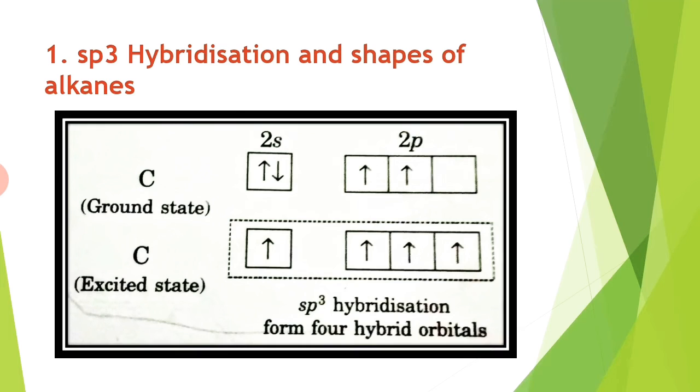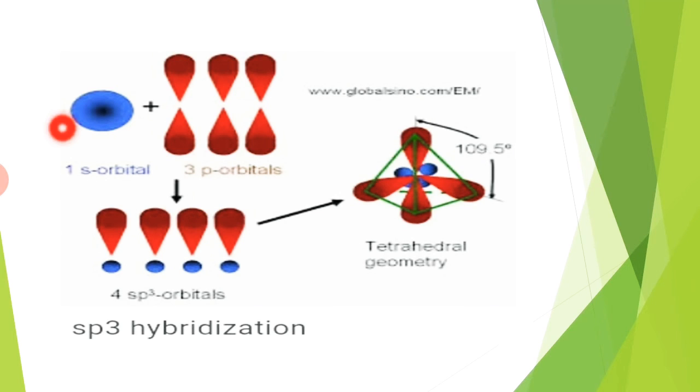There is a very small energy gap between 2s and 2p orbitals. When the electron goes from the 2s orbital to the empty 2p orbital, there are four unpaired electrons. These four unpaired electrons, when reorganized into four identical hybrid orbitals, are called sp3 hybrids because they are made up of one s orbital and three p orbitals, which are combinedly called sp3 hybrid orbitals.